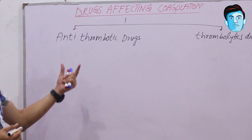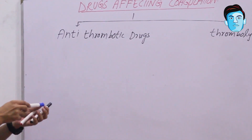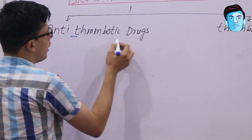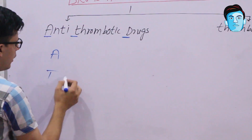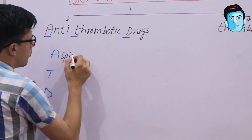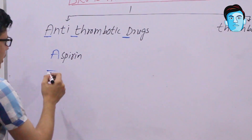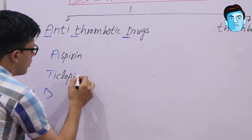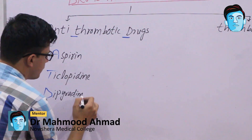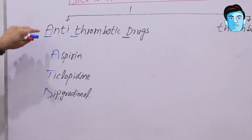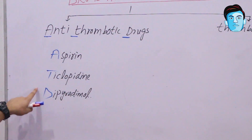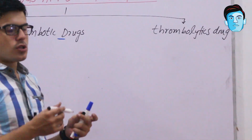To recall the drugs under the category of antithrombotic drugs, emphasize on the initial letters: A, T, and D. Where A stands for aspirin, T stands for ticlopidine, and D stands for dipyridamole. So the drugs coming under the category of antithrombotic drugs are aspirin, ticlopidine, and dipyridamole.